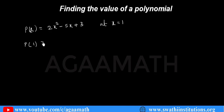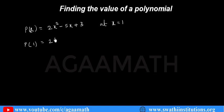What we do is very simple. Since x equals to 1 is given, in the place of x we substitute the value 1. So this becomes p of 1. P of 1 is nothing but 2 of 1 squared minus 5 of 1, because x is 1, plus 3.